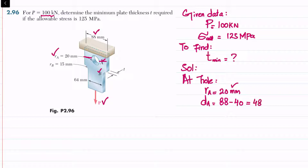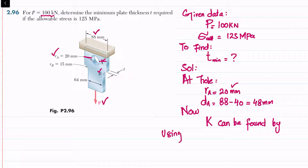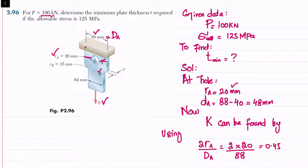We know the stress concentration factor k can be found using 2·ra divided by capital D. We have 2 × 20 divided by 88 — capital D is the full width of the plate — which equals 0.455. Now we will find k using Figure 2.60a.